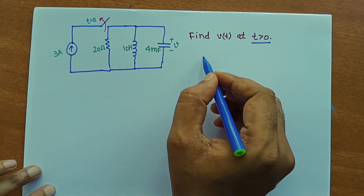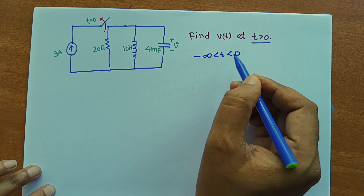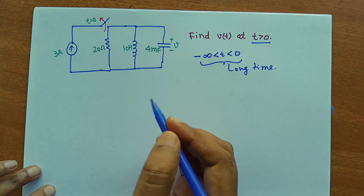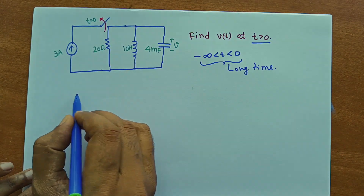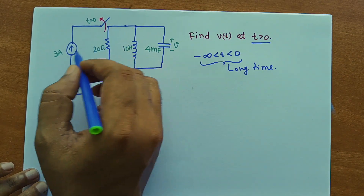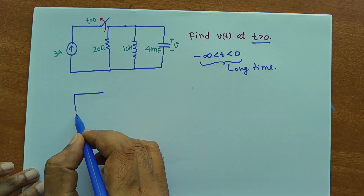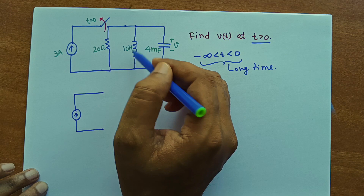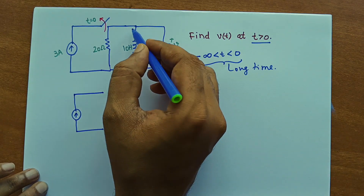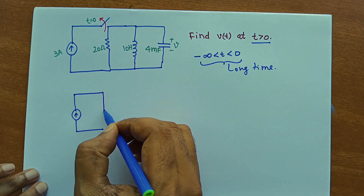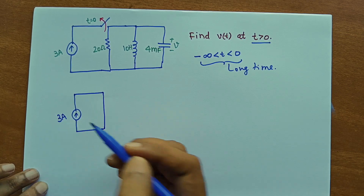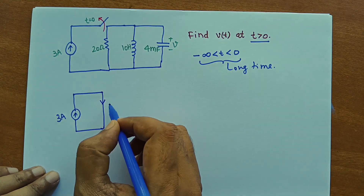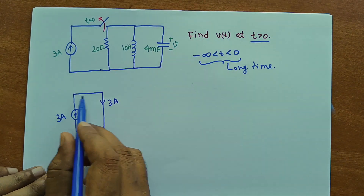First of all, we will take time from minus infinity to zero — that means this is called a long time. Before T equal to zero, this switch was connected, so we can draw the circuit for that period. With the switch connected, there will be a DC source supplied here. Due to that DC source, the inductor will be short circuited and the capacitor will be open circuited. If you put a short circuit across this 20 ohm resistor, this will become a short circuit. So this is a 3 ampere current flowing, and the same current will flow through this branch.